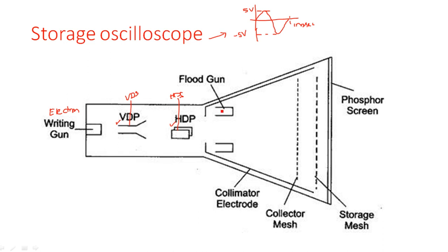There are two flat guns — flat guns are used to produce the electron beam in the absence of an input signal. There is a collimator electrode placed on either side of the screen. We also have a collector mesh, a storage mesh, and a phosphor screen. In a conventional CRO we have the phosphor screen — those are the standard components. Additionally in the storage oscilloscope we are using: flat guns, collimator, collector mesh, and storage mesh.